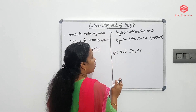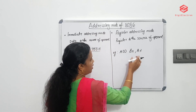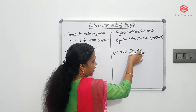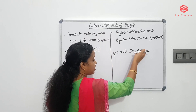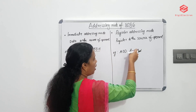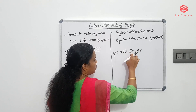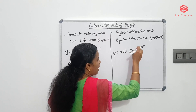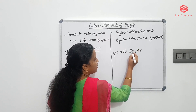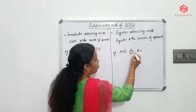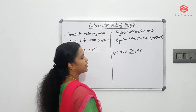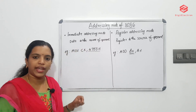For example, ADD BX, AX. The data is not in memory — it is in the AX register. We add the BX register and AX register; after this, the answer is stored in the BX register. That is register addressing mode.